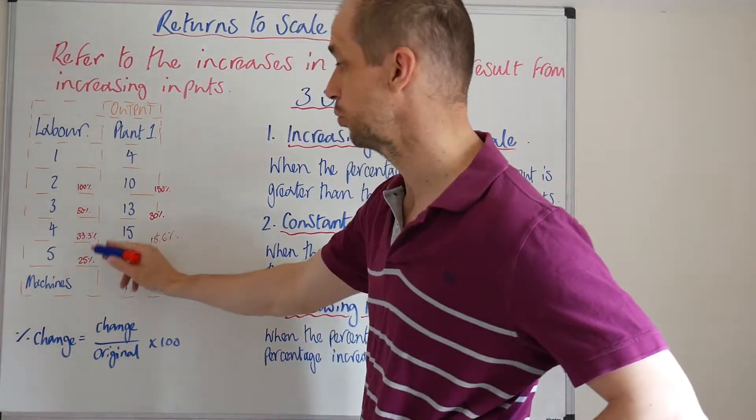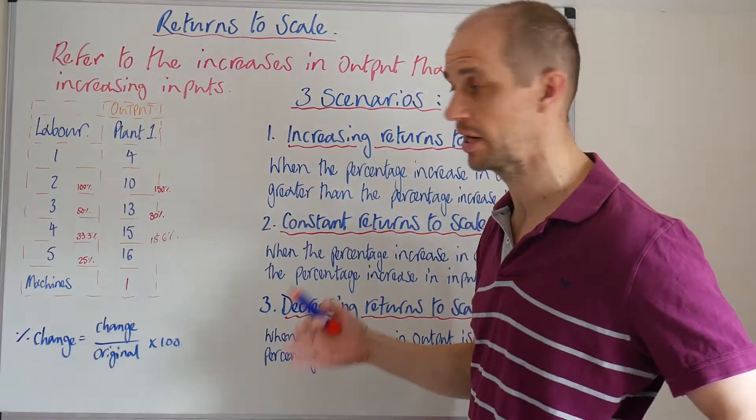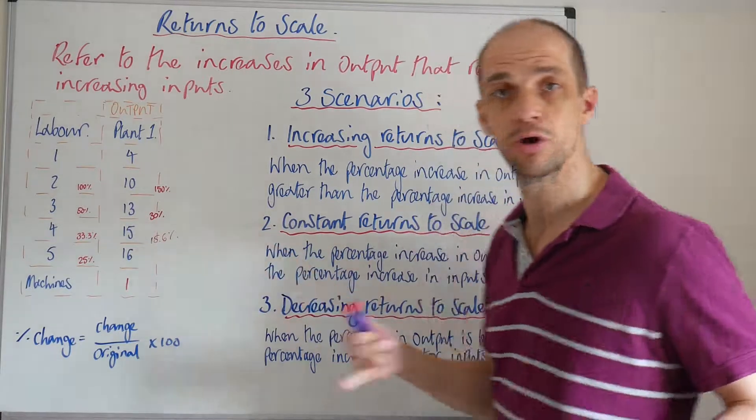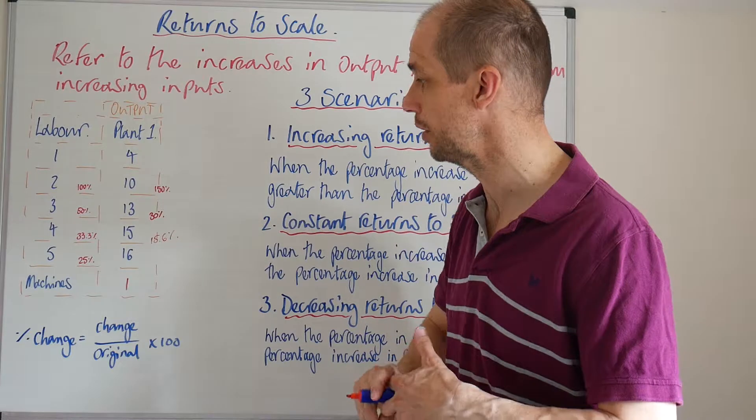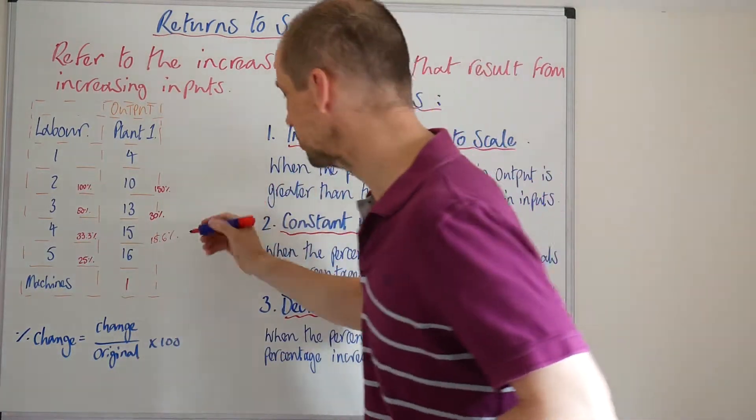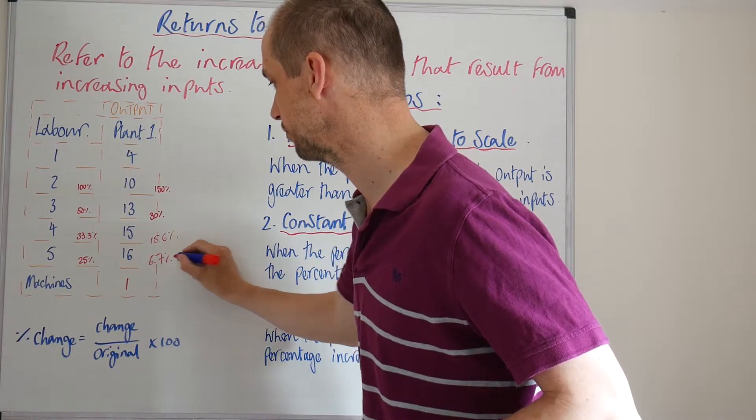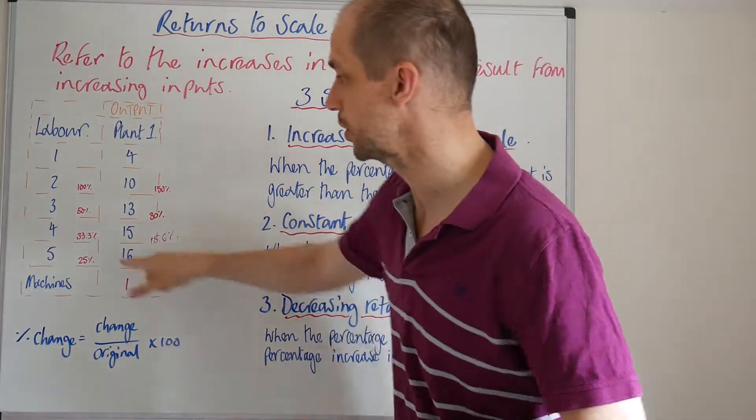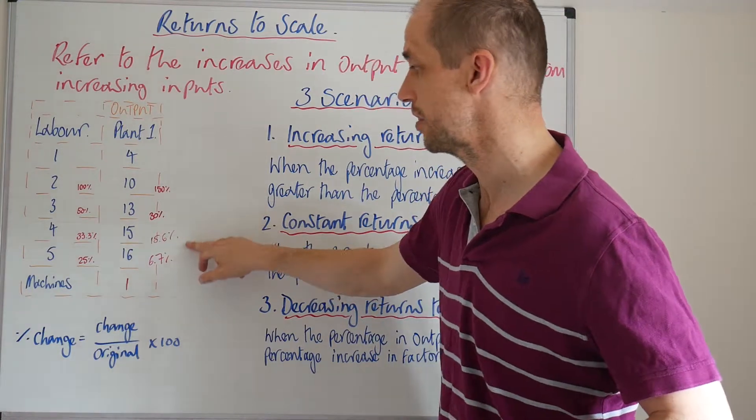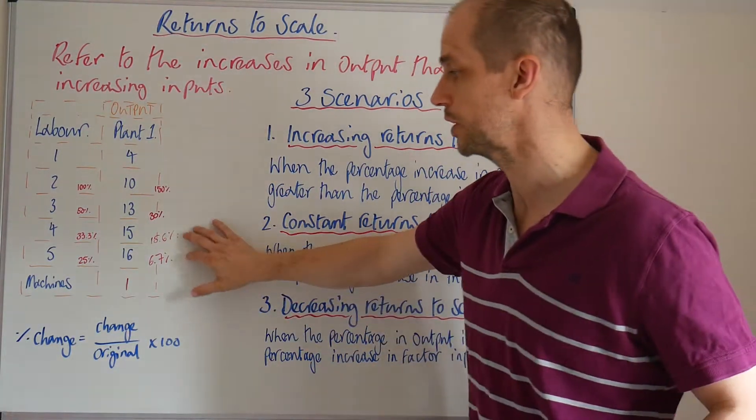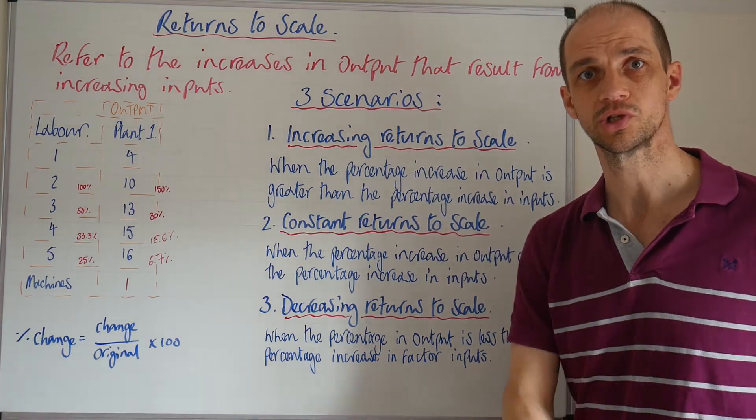For our last example, as we move from 4 labourers to 5, well, that's a 25% increase in the workforce. But look, the output only increases by 1. So as that output only increases by 1, 1 divided by 15, that only gives us a potential return of about 6.7%. So once again, we see those decreasing returns, the fact that those factor input increases are greater than the actual output generated increases. This is important stuff. I hope that's been useful. See you next time.